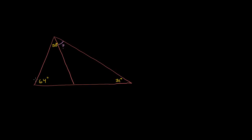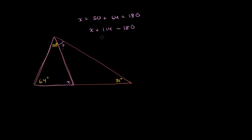The first thing that pops out to me is we have the triangle on the left, and we're given two of the angles. If you have two of the angles in a triangle, you can always figure out the third angle because they add up to 180 degrees. So if you call that x, we know that x plus 50 plus 64 is going to be equal to 180 degrees. So x plus 114 equals 180, and x is equal to 180 minus 114, which is 66 degrees.